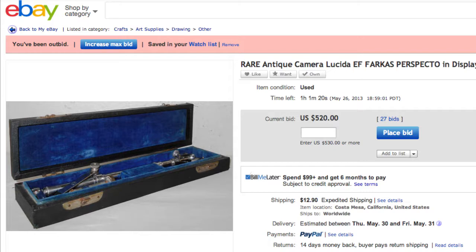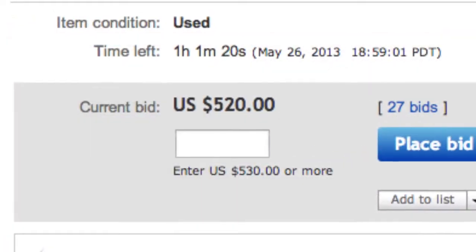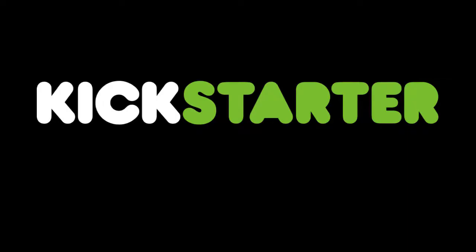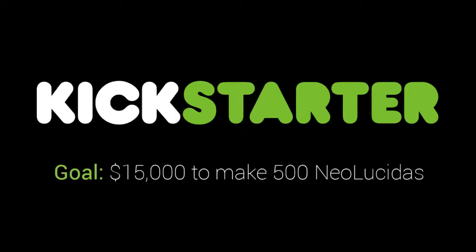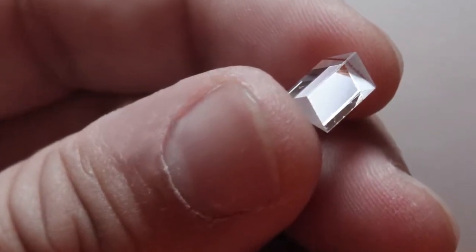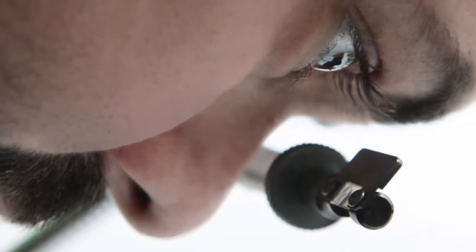The problem is that Camera Lucidas are antiques and priced accordingly. So we figured we'd make our own inexpensive version. We decided to crowdfund it to pay for the minimum order of 500 custom prisms. We would make small batches as an experiment and then move on. After all, how many people would want an obsolete device few had ever heard of?